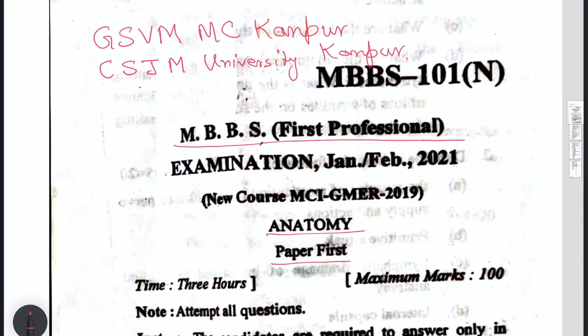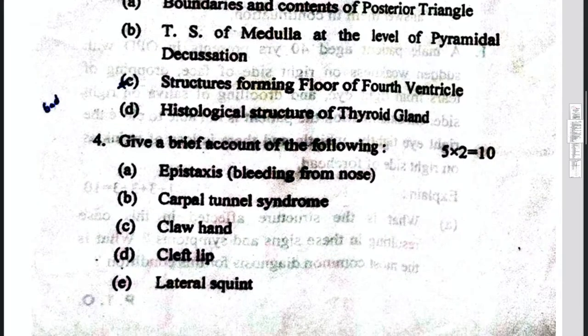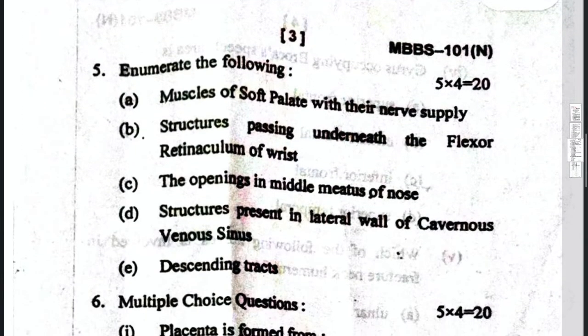According to the new GMER NCI guidelines from 2019 onwards, this question paper is of 3 hours and 100 marks. There are 10-mark questions, clinical days, short questions, diagram-based questions, enumerating questions, and question number 6 which I am going to solve is about multiple choice questions.